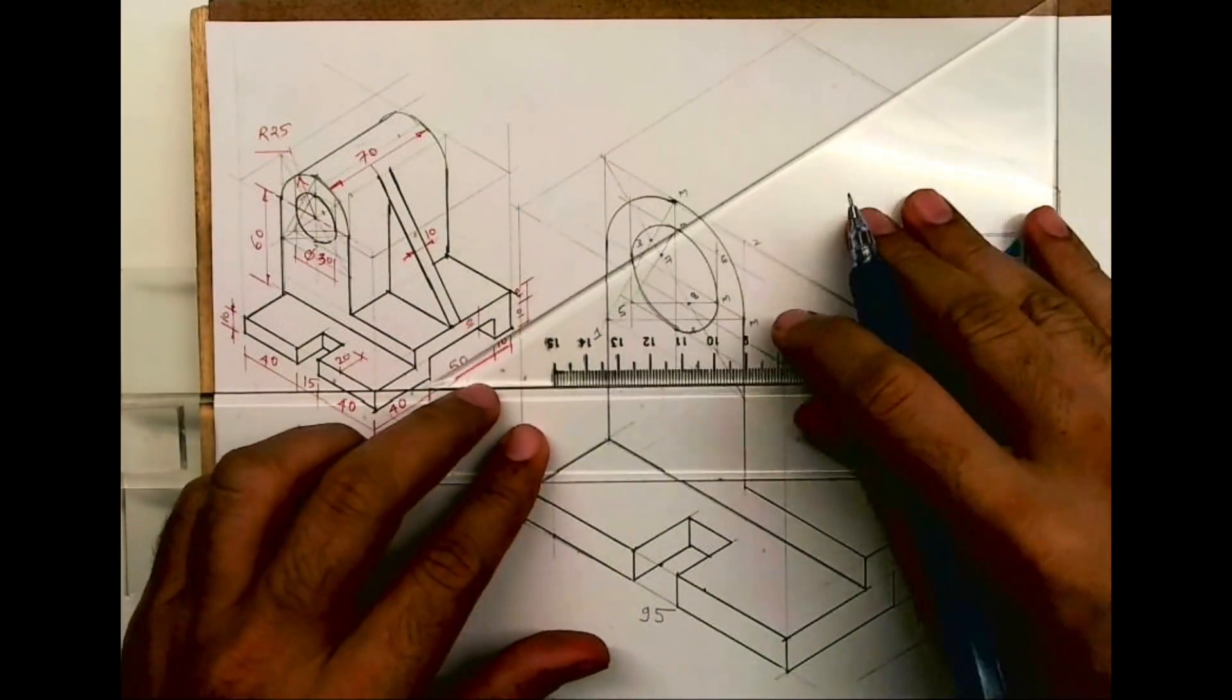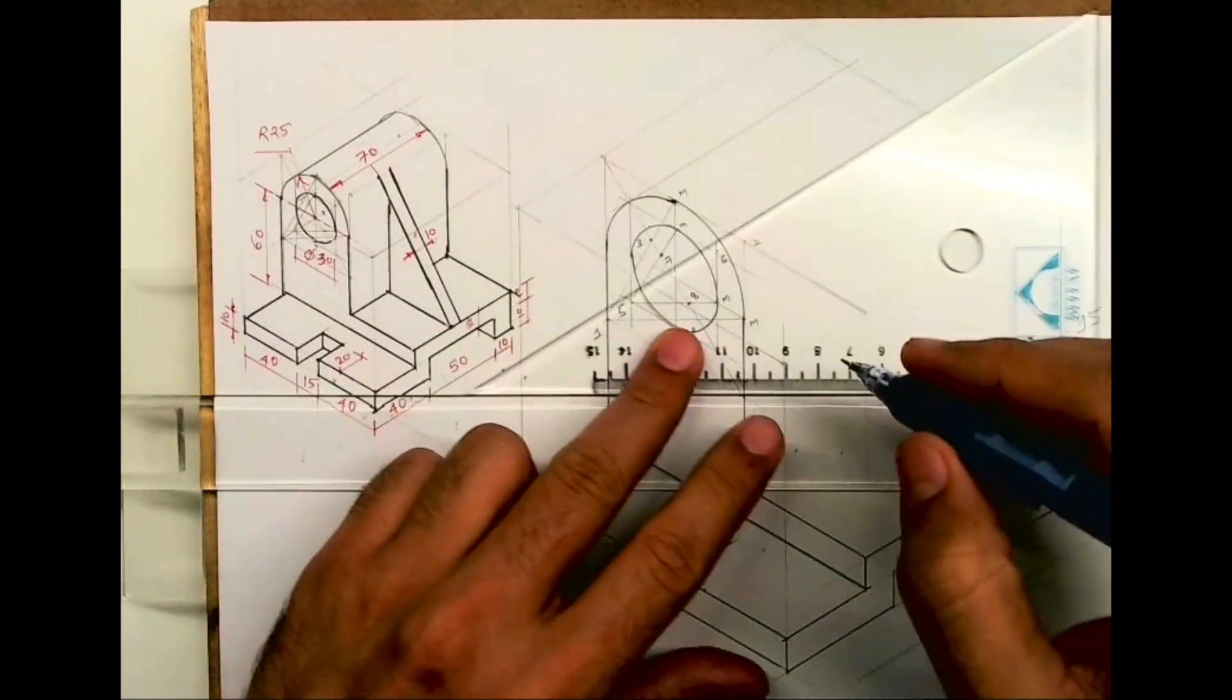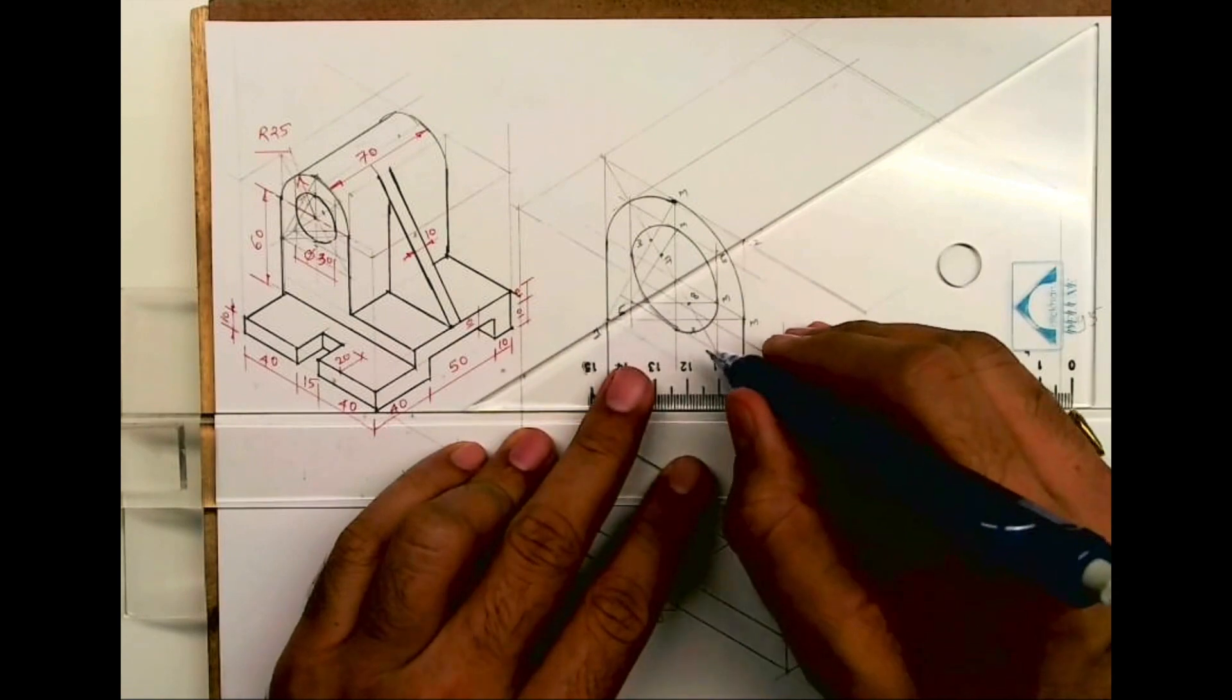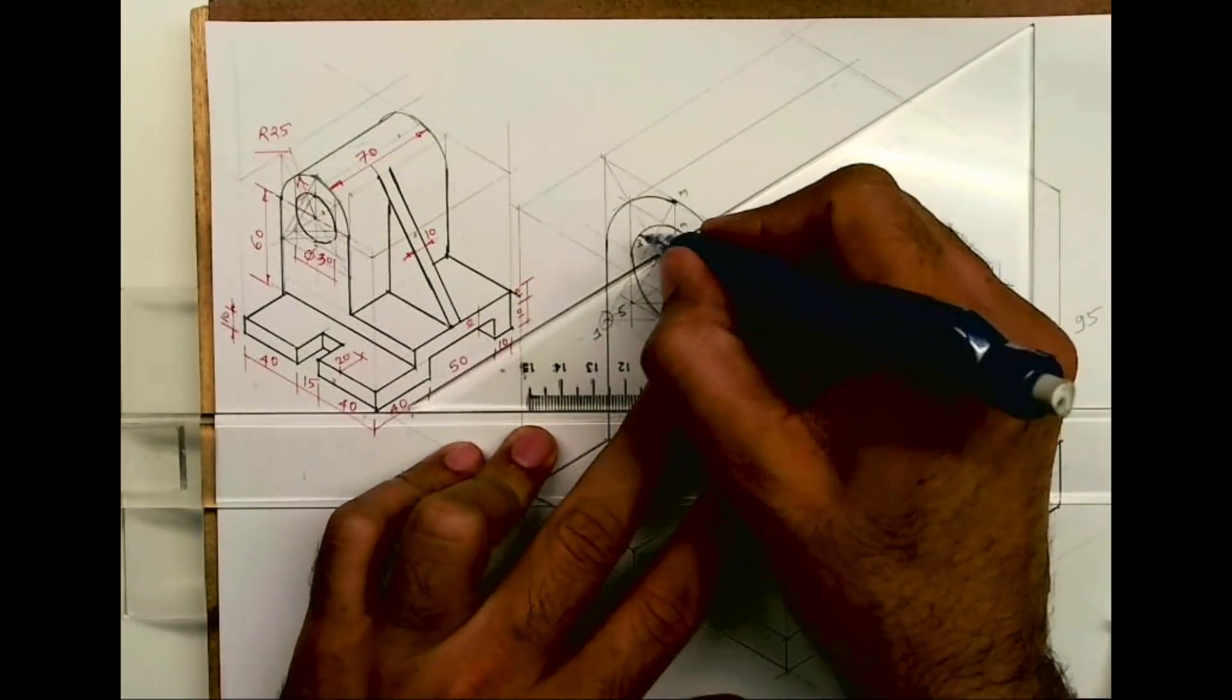After that we'll extend this point behind. See, first we will draw tangent. Now the same circle we want behind, so what we will do from point one and from point three we'll go behind by how much?